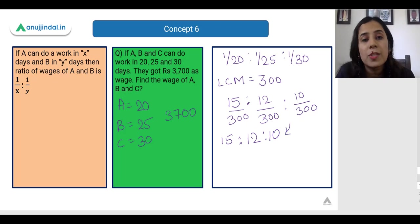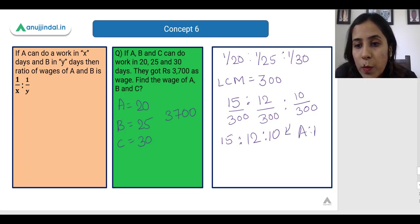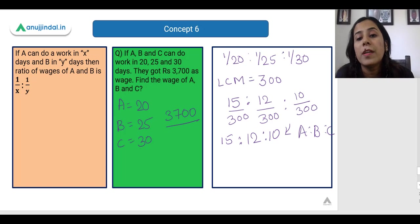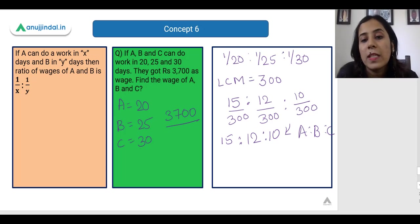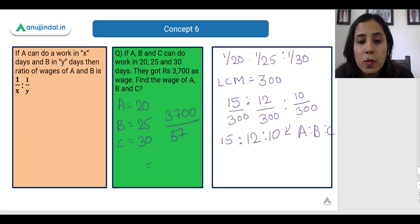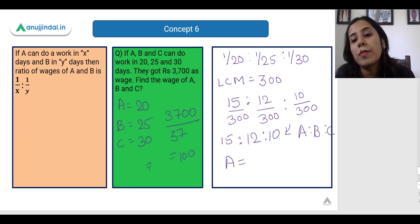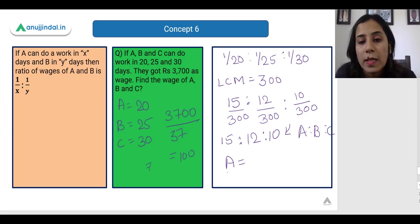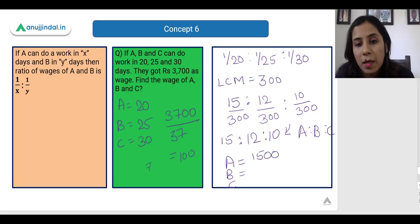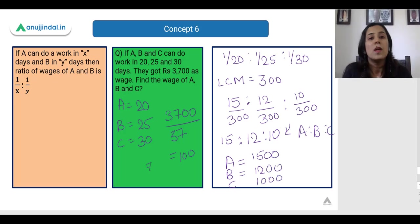So the ratio of wages A : B : C = 15 : 12 : 10. Dividing 3700 by the sum 15 + 12 + 10 = 37, we get 1 unit = 100. Multiplying: A gets 100 × 15 = 1500, B gets 100 × 12 = 1200, and C gets 100 × 10 = 1000. The individual wages are found within seconds using this shortcut.